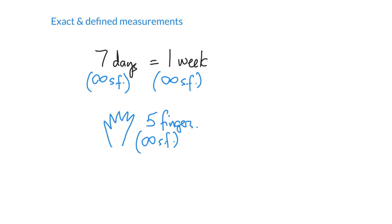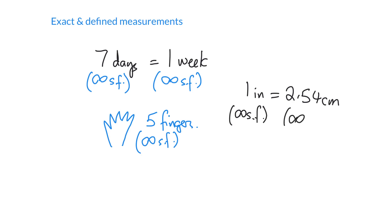Another example: one inch is defined as exactly 2.54 centimeters. This is defined in legal code. So whatever country you're in, one inch is exactly 2.54 centimeters — it is not just three significant figures or one significant figure. Every digit counts. If a number is exact or defined, it has an infinite number of significant figures.